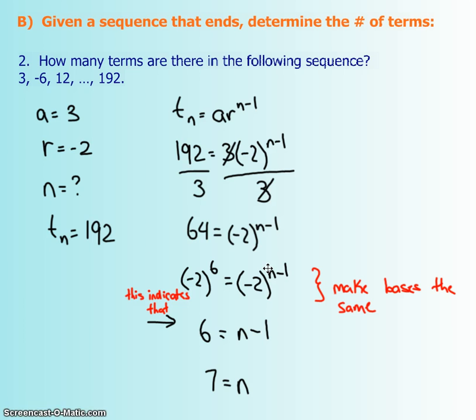When both the bases are the same, we can then indicate that, remember the arrow, this exponent is equal to this exponent. Now we put the arrow because if someone were to read this, they would probably think, well, where'd the 2's go? They didn't cancel out. We're just saying that, because these two are the same, the exponents must be the same. And then we solve for N, which is 7. That means that the 7th term is 192.